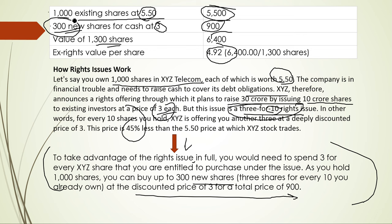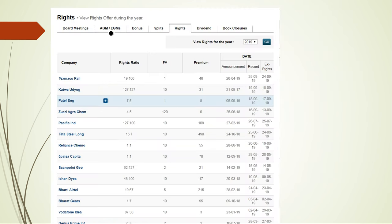What is the difference between rights, bonus, and split? When a company declares a bonus — say 1-for-1 or 2-for-1 — you get free shares. With a split, the share value or face value comes down but the number of shares doubles. But with rights, everything else remains the same; you are paying extra to get additional shares at a discounted price. This is the main difference between bonus, split, and rights.